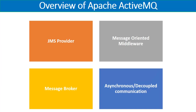Apache ActiveMQ is one of the very well-known JMS providers in the market and has been heavily used for quite a long time. When we talk about JMS providers, JMS specifications are defined and there are different providers — open source or proprietary — which implement those JMS specifications. JMS providers are compliant to those specifications and provide the functionality that serves the required purpose as a message-oriented middleware.